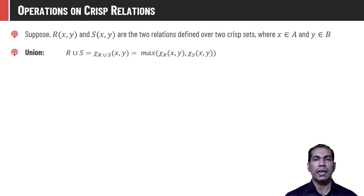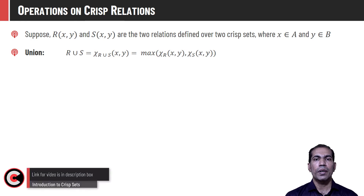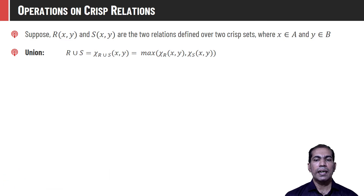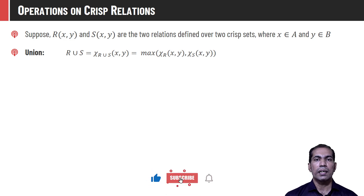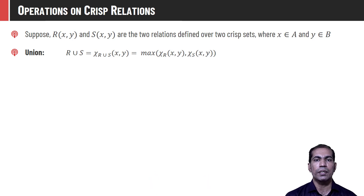Operations on crisp relations are identical to those on crisp sets — if you don't know how to perform crisp set operations then I recommend watching the video introduction to crisp sets, link is in the description box. Let R and S be two relations defined over universe X and Y, where element x belongs to set A and y belongs to set B. The union of these two relations is defined as R ∪ S, and the membership value of every tuple (x, y) in this union is χ_{R∪S}(x, y) = max(χ_R(x,y), χ_S(x,y)), since the union operation always returns the maximum value of the two arguments.